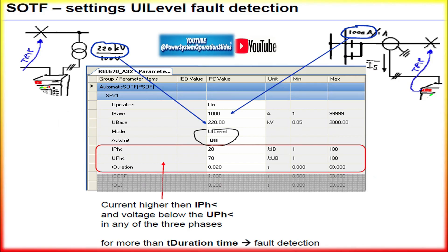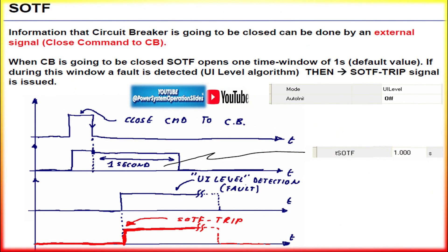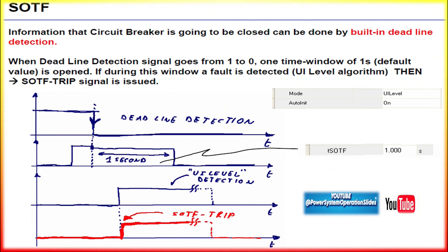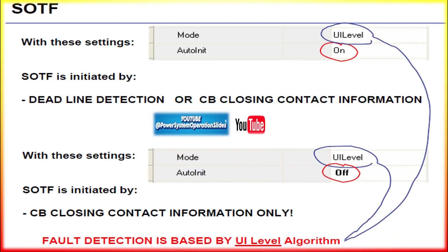To delve deeper into the SOTF function and its relevance to distance protection, let's examine more intricate technical aspects — focusing on operational challenges, relay configuration, and coordination with other protection schemes. When a fault exists on a transmission line but the breaker is open, the relay's normal distance protection using impedance measurement may not be able to detect this fault until current flows through the line. The SOTF feature becomes essential when the circuit breaker closes onto a faulted line. Upon closing the breaker, in the pre-fault condition when the breaker is open, there is typically little to no voltage across the open breaker terminals, as the fault effectively shorts the line. This low voltage condition is detected by the relay.